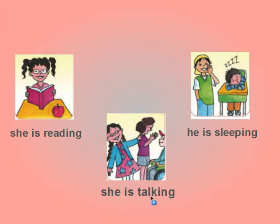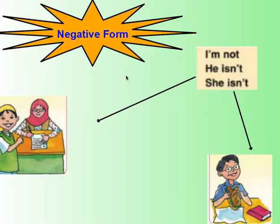Now, what about the negative form? In the affirmative we have verb to be: I am, he is, she is. But in the negative we add not — not is a sign for negation. So: I am not, he is not, she is not. We keep the verb plus ing as it is.